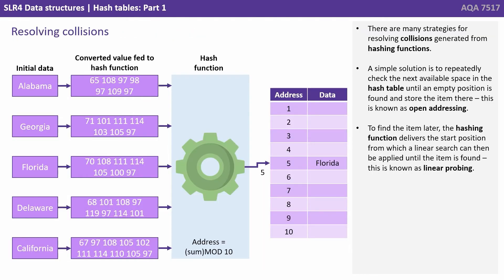There are many strategies for resolving collisions generated from hashing functions. A simple solution is to repeatedly check the next available space in the hash table until an empty position is found and store the item there. This is known as open addressing. To find the item later, the hashing function delivers the start position from which a linear search can then be applied until the item is found. This is known as linear probing.